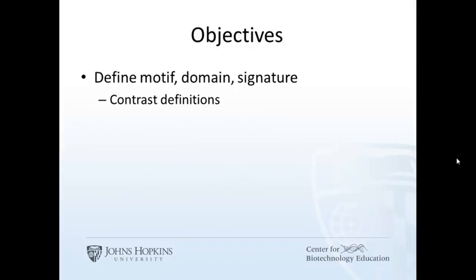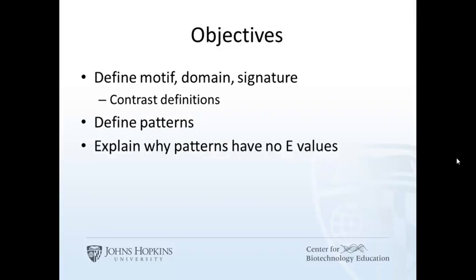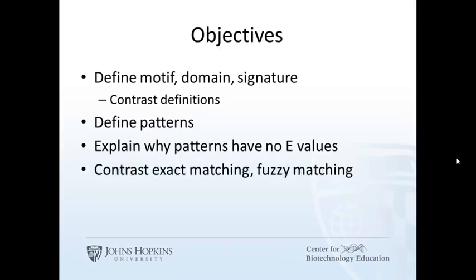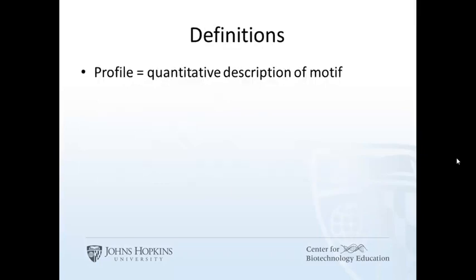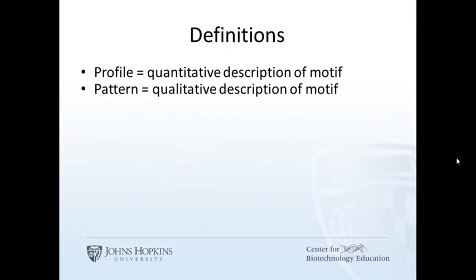We will start with a few definitions and then focus on patterns, qualitative representations of conserved protein regions. Because patterns are qualitative, there are no E values to quantify. There are two ways to match a pattern: exactly and almost. Profiles are quantitative, and patterns are qualitative.